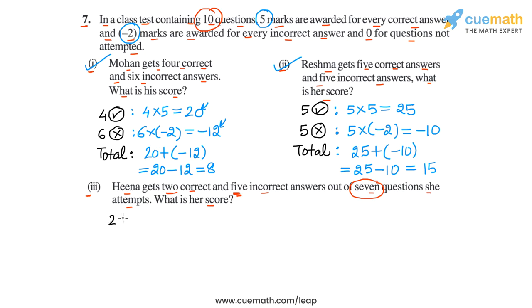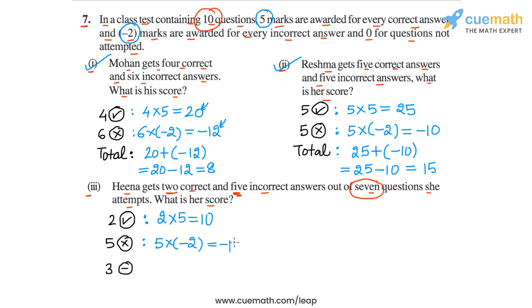She got 2 correct, 5 incorrect, and did not attempt 3 questions. For the 2 correct answers, she will get 2 into 5, or 10 marks. Then for the 5 incorrect answers, she will get 5 into minus 2, or minus 10 marks. And for the 3 unattempted questions, she will get 3 into 0, because for unattempted questions 0 marks are awarded, so 3 into 0 is 0.